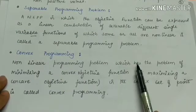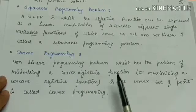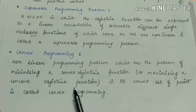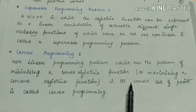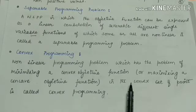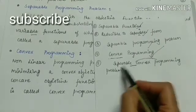The next definition is convex programming: a nonlinear programming problem that involves minimizing a convex objective function over a convex set of points is called convex programming. The problem is an NLP type, the objective function is of minimization form, and it satisfies the concept of convexity.